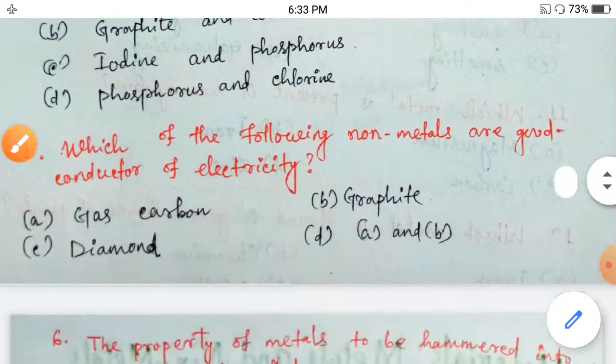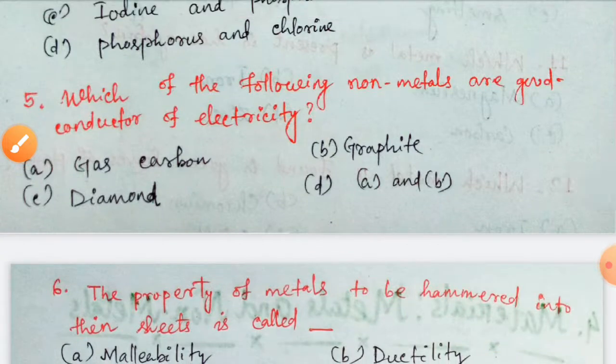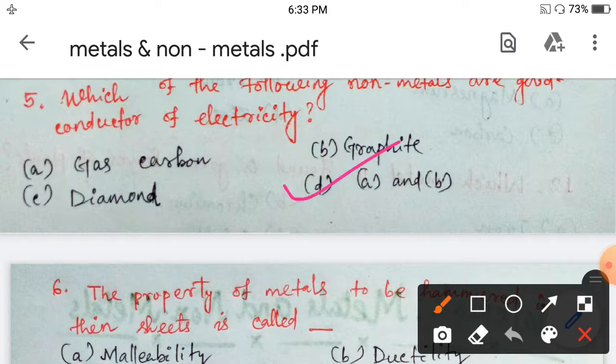Next, which of the following non-metals are good conductor of electricity? Gas carbon, graphite, diamond, both A and B. It is option D. Both gas carbon and graphite are good conductor of electricity. Option D.